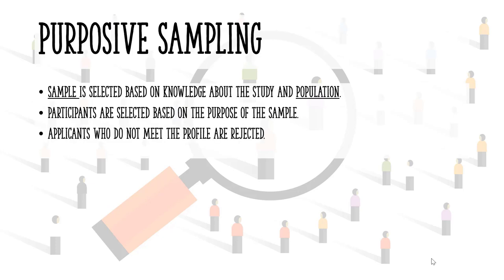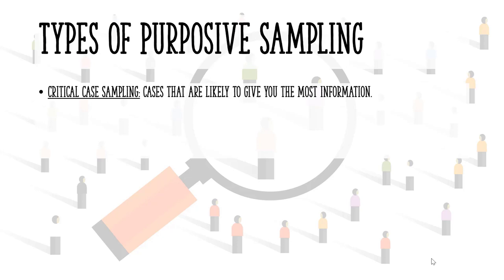Participants who don't meet the profile are rejected. For example, you may be conducting a study on why high school students choose community college. Your first question might be: are you planning to attend college? People who answer no would be excluded from your study.